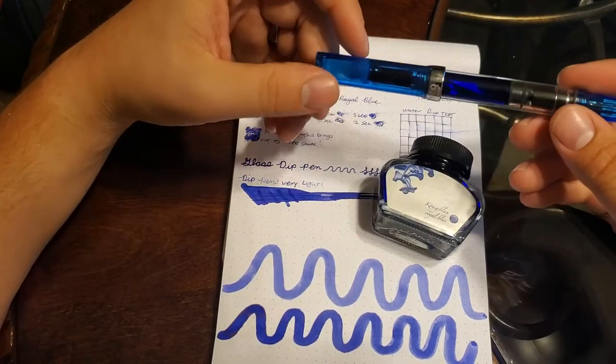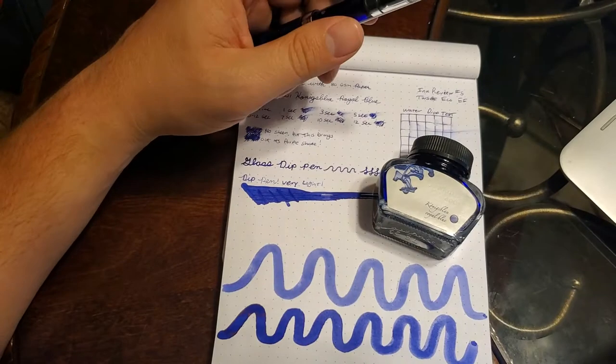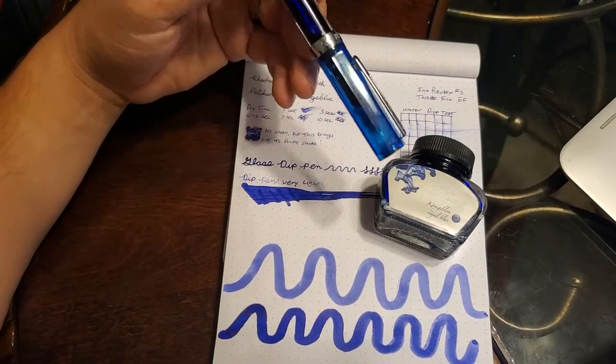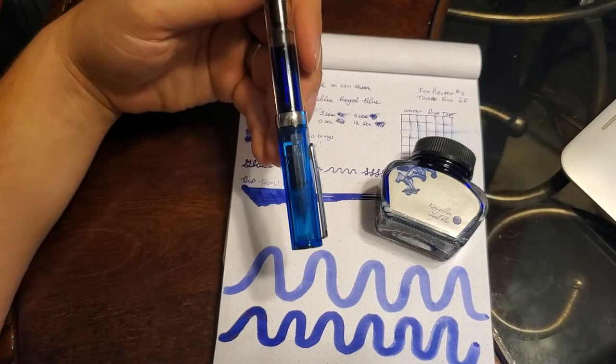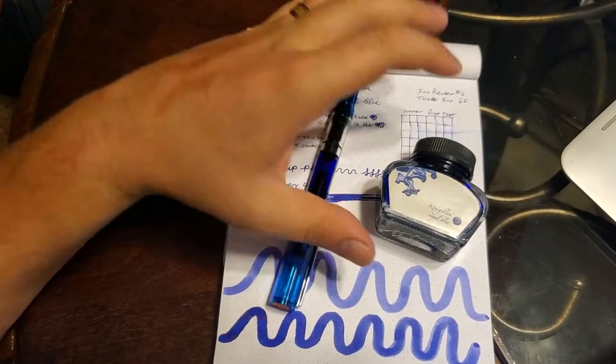And naturally, with my blue TWSBI Eco, I just had to fill it up with an awesome blue ink. Because that's what you do when you have a blue pen. You put blue ink in it. No, I'm kidding. I'm just one of those weirdos that really likes to keep blue pens with blue ink. But again, if I like blue, I'm going to have a lot of blue stuff.